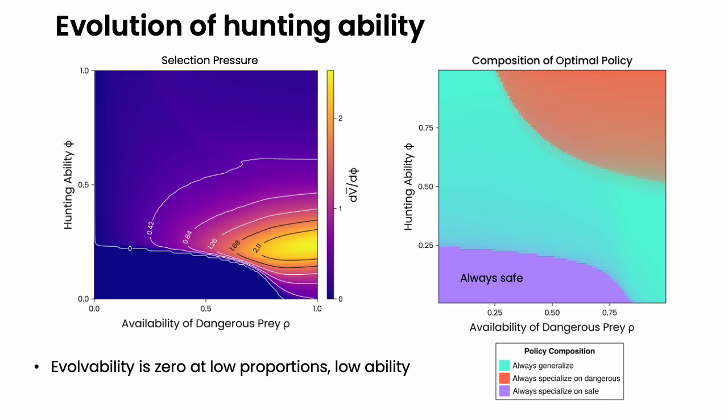And this means that the evolvability of hunting ability is low when there is a low proportion of dangerous prey and also a low hunting ability itself. And the evolvability, contrarily, is the highest when there's a high proportion of dangerous prey while the hunting ability is still low. Thank you for coming to my poster.